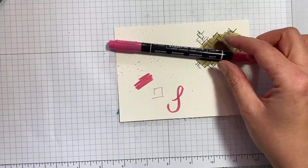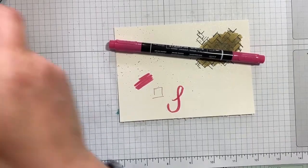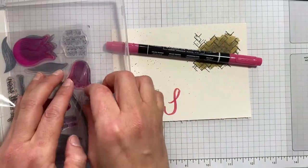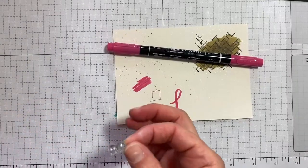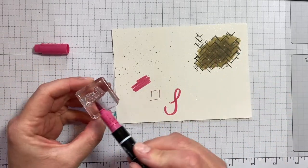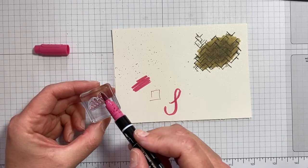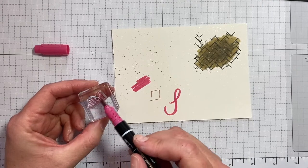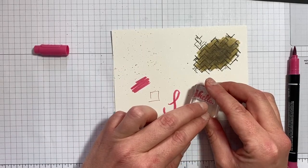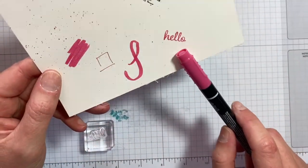And you can stamp with them as well, which is really great. Let's take a sentiment from Timeless Tulips. And using the side of your brush nib, you're just going to just gently rub your marker over the surface of the stamp. And there we have it. A lot of people don't realize that you can use them for stamping.